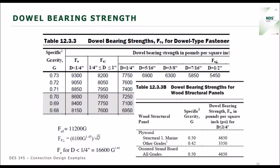For fasteners larger than a quarter inch in diameter, dowel bearing strength varies depending upon both the fastener size and the orientation to grain. FE parallel is listed for fasteners between one-quarter inch and one inch in diameter. When you have perpendicular-to-grain loading, it will vary depending upon the fastener diameter. Table 12.3.3 also has some additional dowel bearing strengths for wood structural panels, and there's also additional information in Technical Report 12. For proprietary products, you can check with the manufacturer as well.